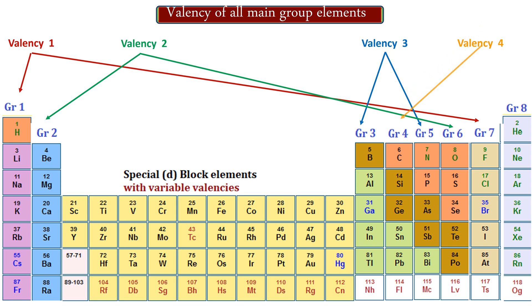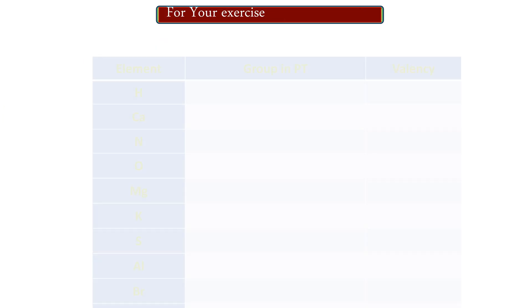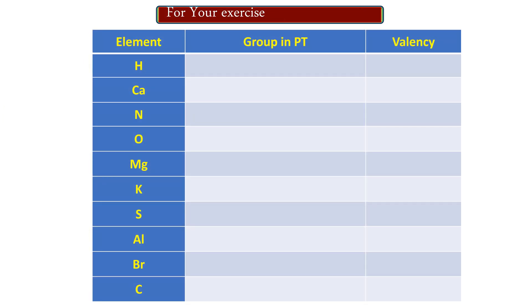Only group four in the periodic table has valency four. For your exercise, look at the table which contains some symbols of elements. Your job is to find the symbols in the periodic table, identify their groups, and accordingly write the valency of each element. This is how you can use the periodic table to identify valencies of any element from their symbol.